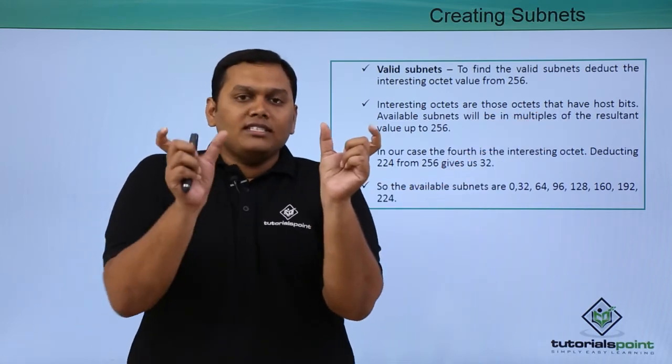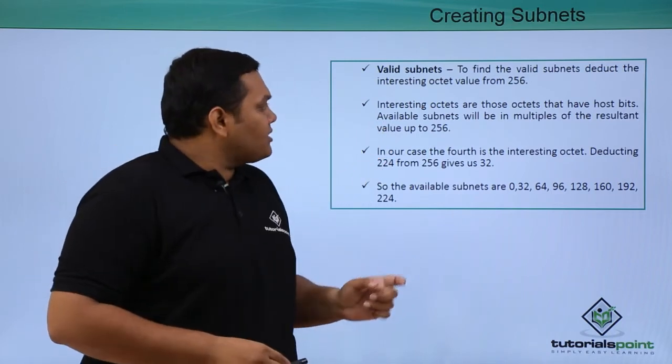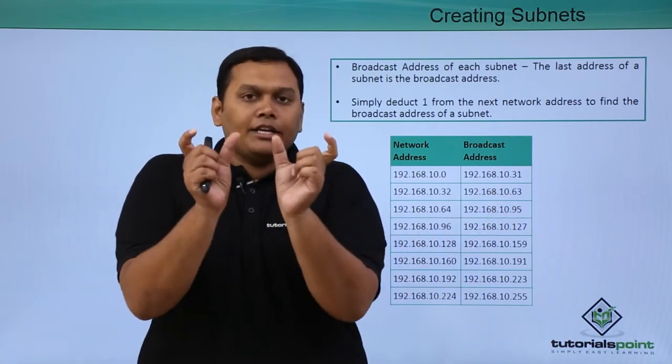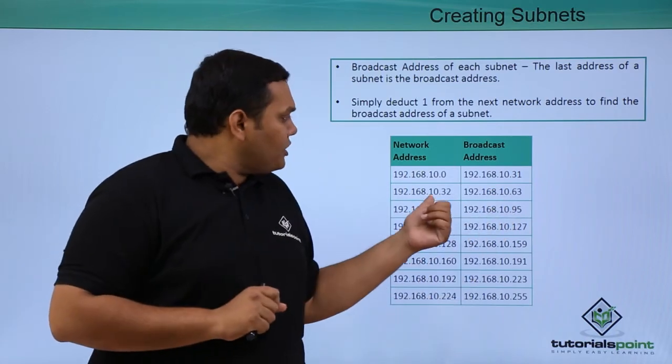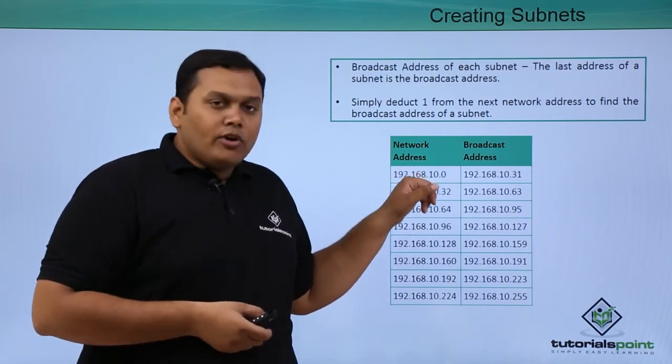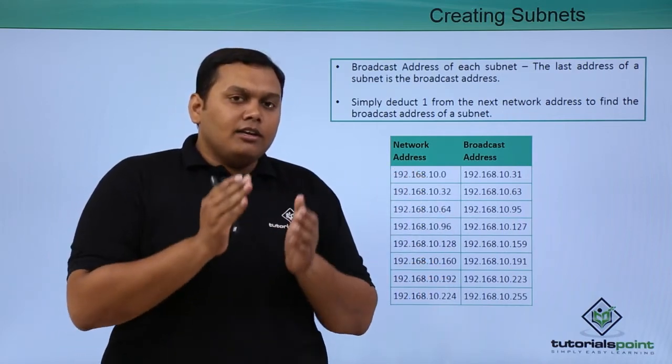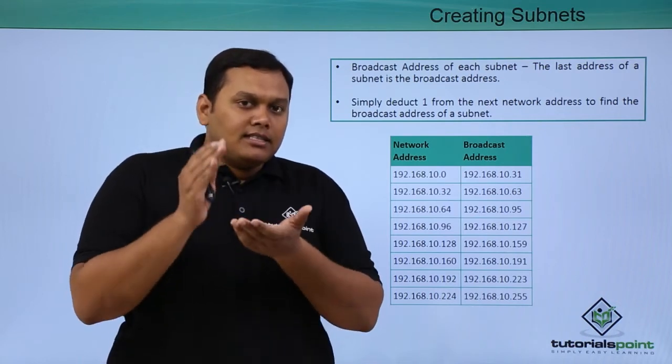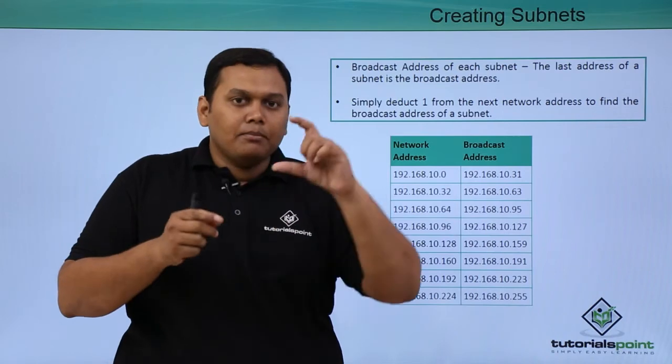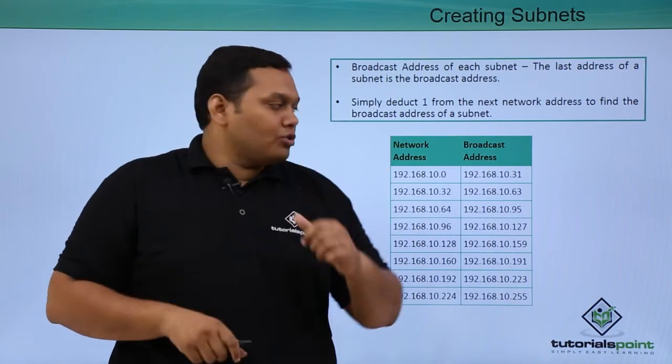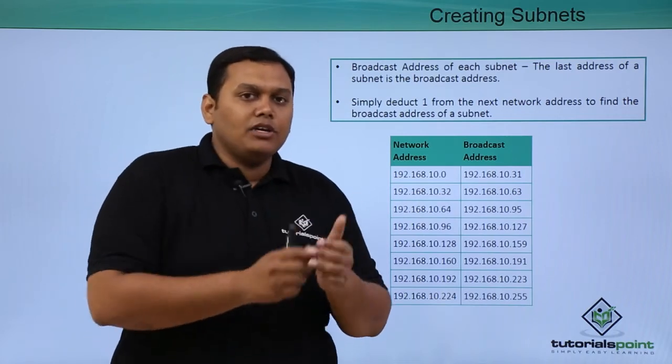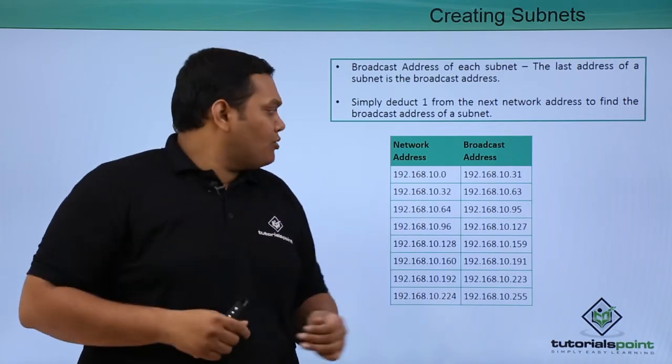So how are these networks segregated? You can see how these networks are segregated from 0 to 31, which are 32 in number. Again from 32 to 63, which are 32 in number. So this way the requirement is fulfilled here. We divide the Class C network given to us into 8 networks, each one having 30 hosts.